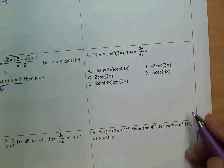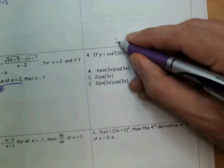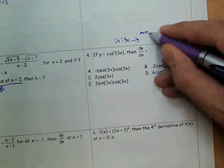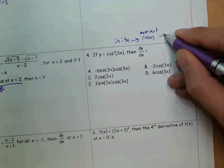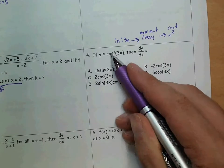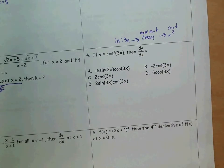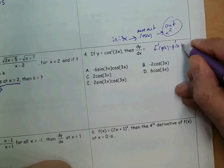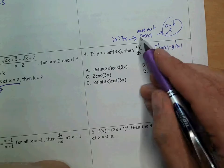Number four asks you to do dy/dx. dy/dx is another way of saying find the derivative. When you do the derivative, you should notice that not only do we have a chain rule, we have two chains. The very inside function is 3x, which is inside of cosine, and the very outer function is x squared — cosine is being squared. So you'll do the chain rule on the outside function: f prime of g of x times g prime of x. But when you do the derivative of the inside function — cosine of 3x — that function has another function inside of it, so you'll need to do another chain rule.